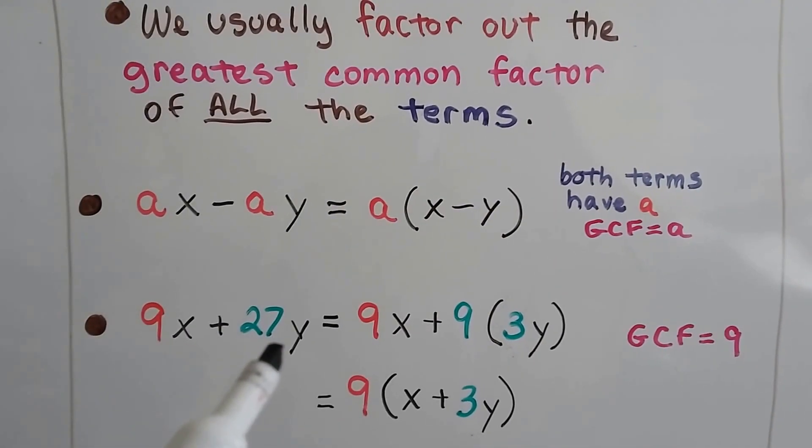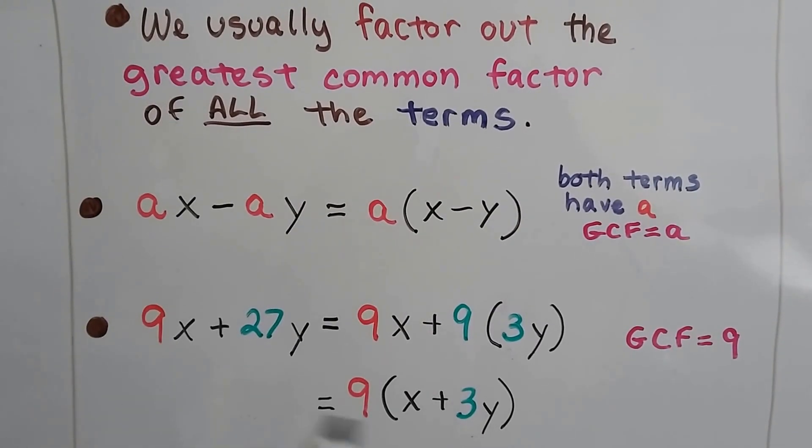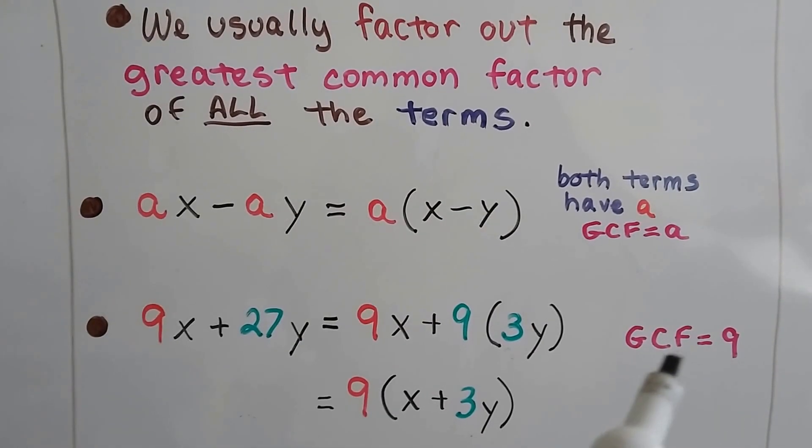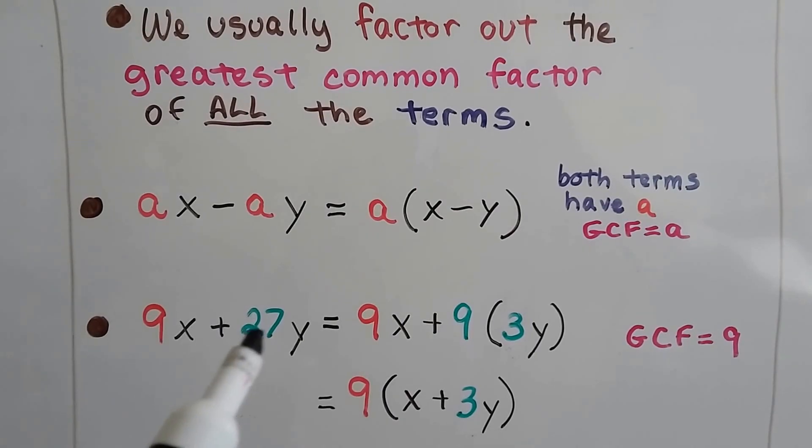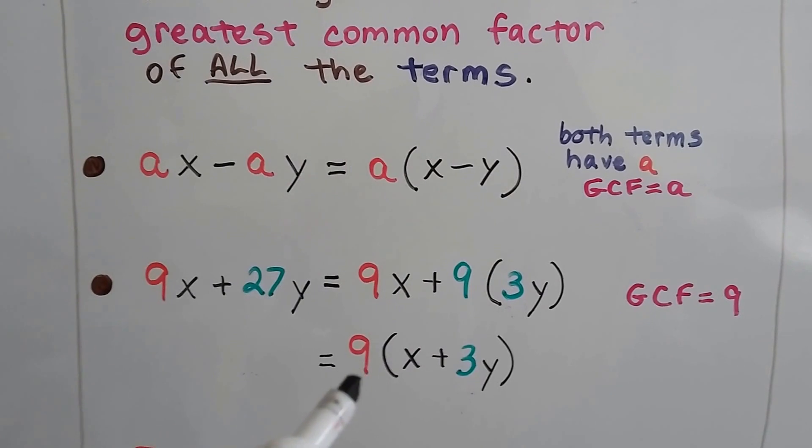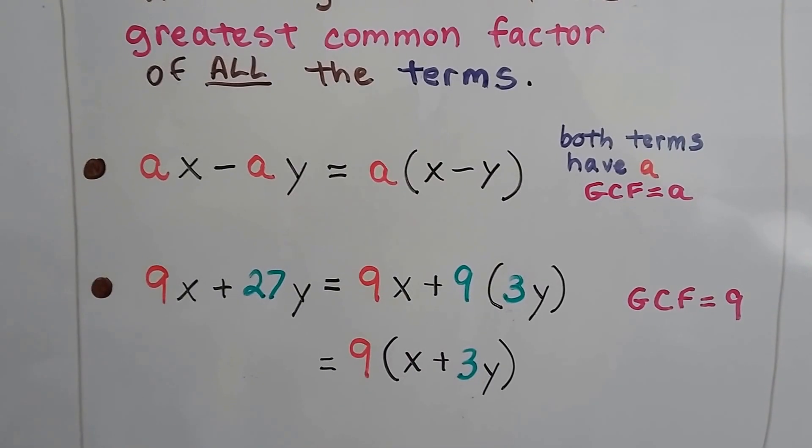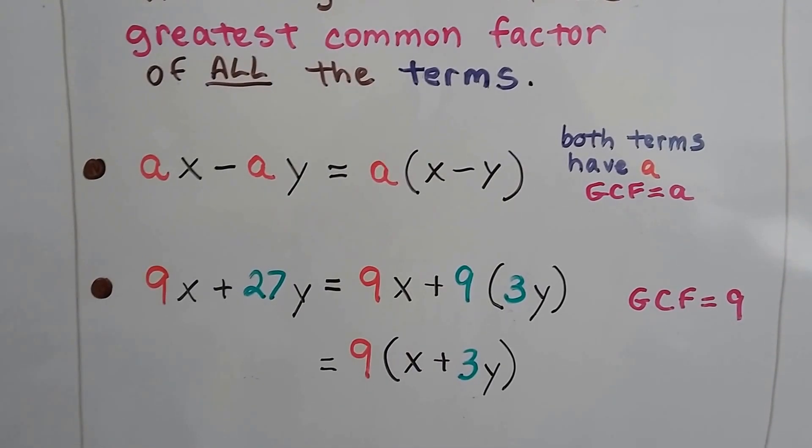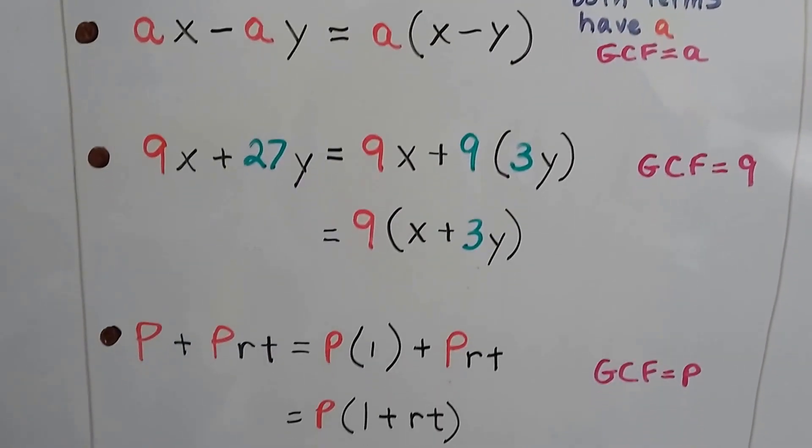For 9x plus 27y, we can factor out the 9, because that's the greatest common factor, because 9 times 3 is 27. We end up with 9 times x plus 3y. We factored out that 9.